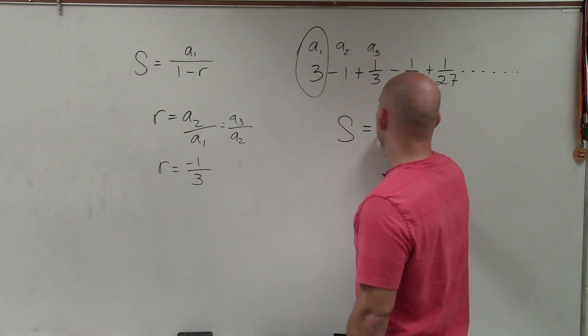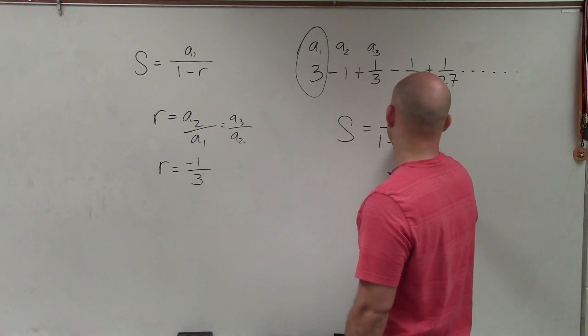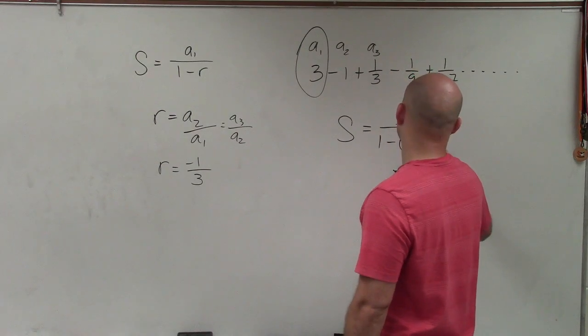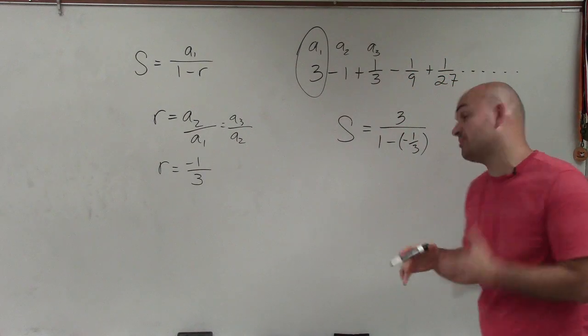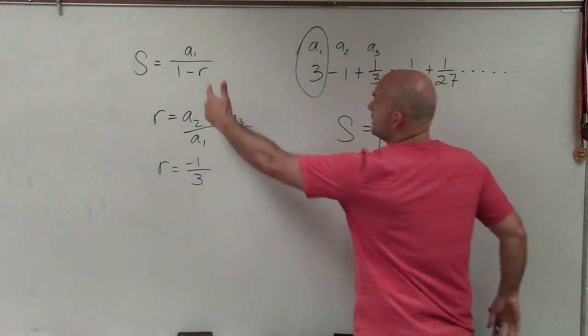So now let's just plug it into our formula. So s equals a sub 1, which is 3, divided by 1 minus negative 1 third. It's very important to make sure we apply that parentheses. It says 1 minus r.